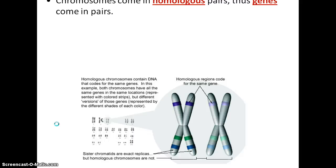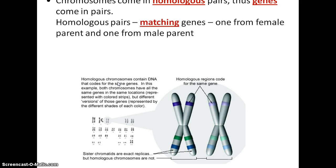Chromosomes come in homologous pairs, or genes come in pairs. Homologous chromosomes are genes that code for the same trait. They're not exactly the same — remember, homologous chromosomes are kind of like your shoes: they're similar, you use them for the same things, you need both of them, but they're not exactly the same necessarily.